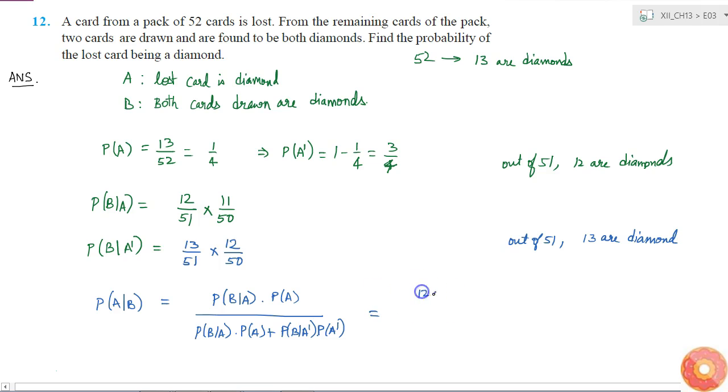I will get 12 times 11 by 51 times 50 times 1 by 4, divided by 12 times 11 by 51 times 50 times 1 by 4, plus 13 times 12 by 51 times 50 times 3 by 4.